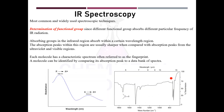So what exactly is IR spectroscopy? When a molecule absorbs IR radiation, vibrations take place, and this spectroscopic method is useful in determining the functional group of the molecule. Different functional groups absorb IR radiations of different frequencies, and through that we can identify which functional group is present.